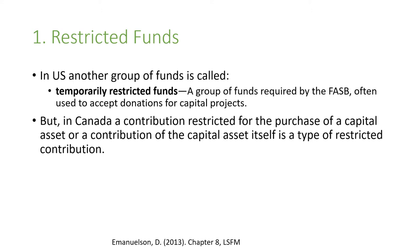In the US there's another type under restricted funds called temporarily restricted funds, discussed in chapter eight of the textbook. These are often used to accept donations for capital projects — such as getting enough resources to build a building. But in Canada, a contribution restricted for the purchase of a capital asset is itself a type of restricted contribution; we don't use the term temporarily restricted funds. A lot of this is about transparency — not mixing donation money with operating money.